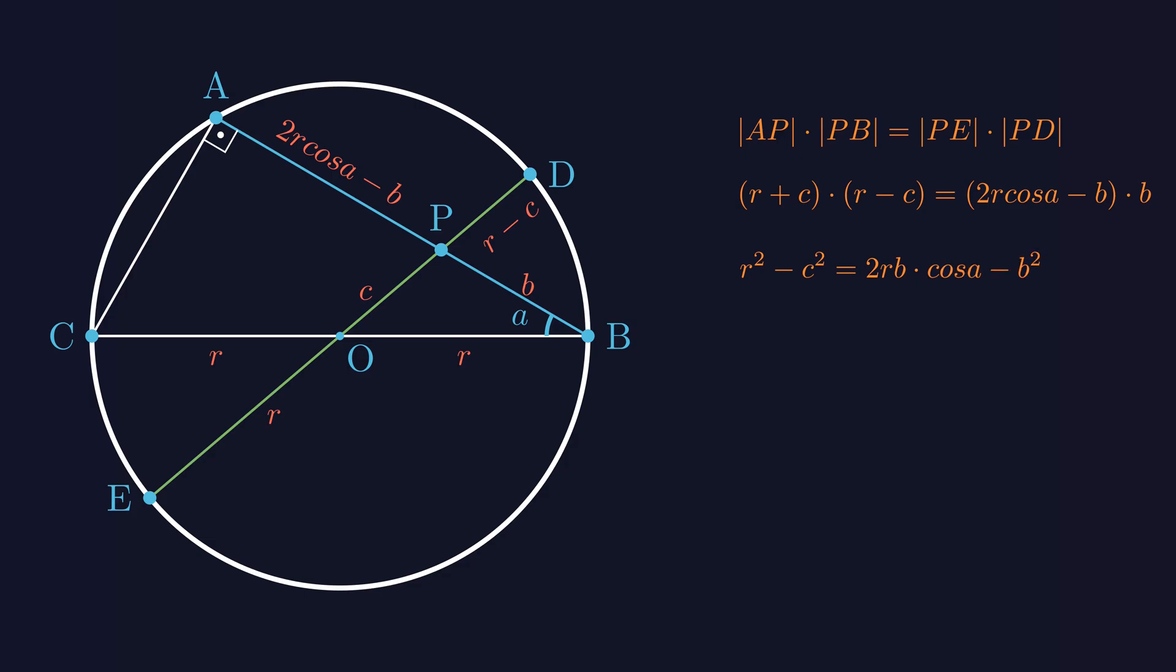Now, our goal is to isolate C. We want to solve for C. And once you do that, what you're left with is this equation right here. Now, look at this red triangle. We're able to find the length of side C using the lengths of the other two sides and the angle between them. And this is exactly what the cosine theorem tells us.